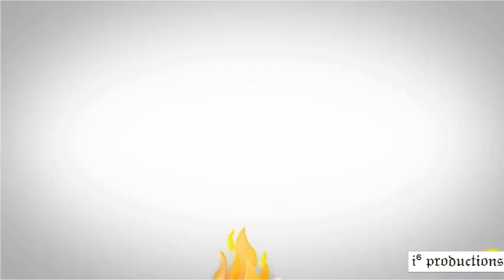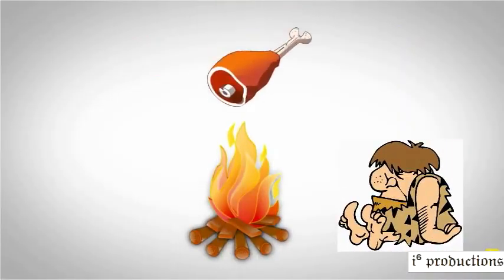Not only did the Homo erectus have useful tools and adaptive features, they were the earliest to have hearths, most commonly known as campfires. Evidence shows that the use of hearths were in the time range of the Homo erectus. They would of course use it for cooking food. It was also used as a place for social interaction, warmth, and a way to keep away large predators.